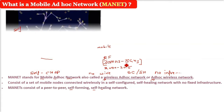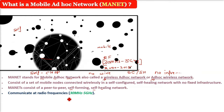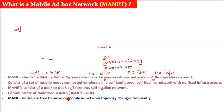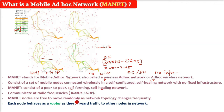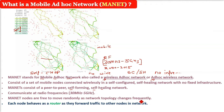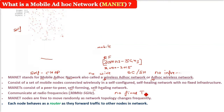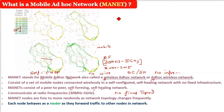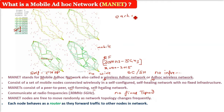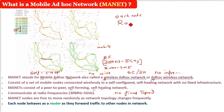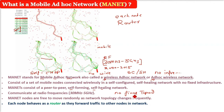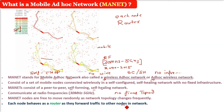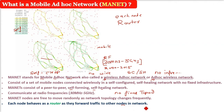MANET nodes are free to move randomly as the network topology changes frequently and spontaneously. Each node sometimes acts as a router, forwarding traffic to other specified nodes in the network.